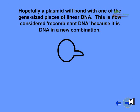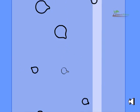Hopefully, a plasmid will bond with one of the gene-sized pieces of the linear DNA. This is now considered a recombinant DNA, because it is DNA with a new combination.